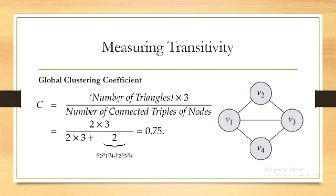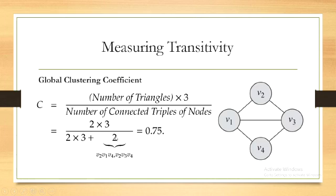We multiply by 3 because in each triangle there are 3 triplets. For triangle V1-V2-V3: the triplets are V1-V2-V3, V2-V3-V1, and V3-V1-V2. For the denominator we find all connected triplets: the 2 triangles give 6 triplets, plus 2 more — V2-V1-V4 and V2-V3-V4 — giving a denominator of 8. So the global clustering coefficient is 6/8 = 0.75, which is considered highly connected.